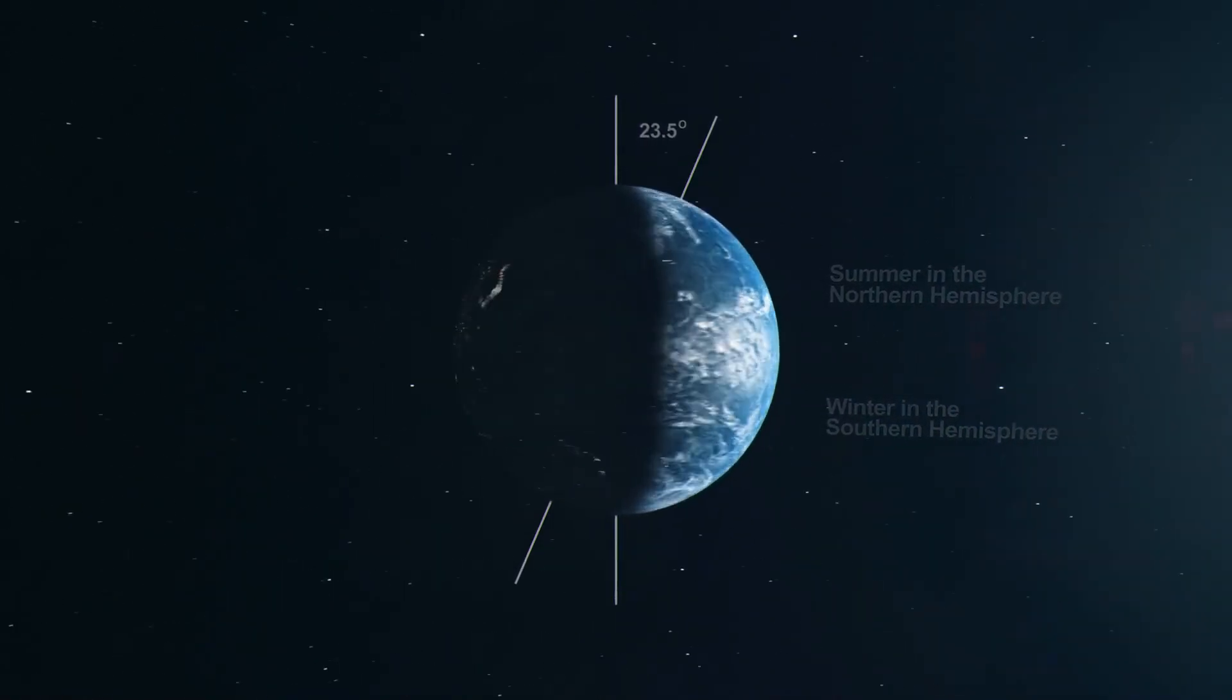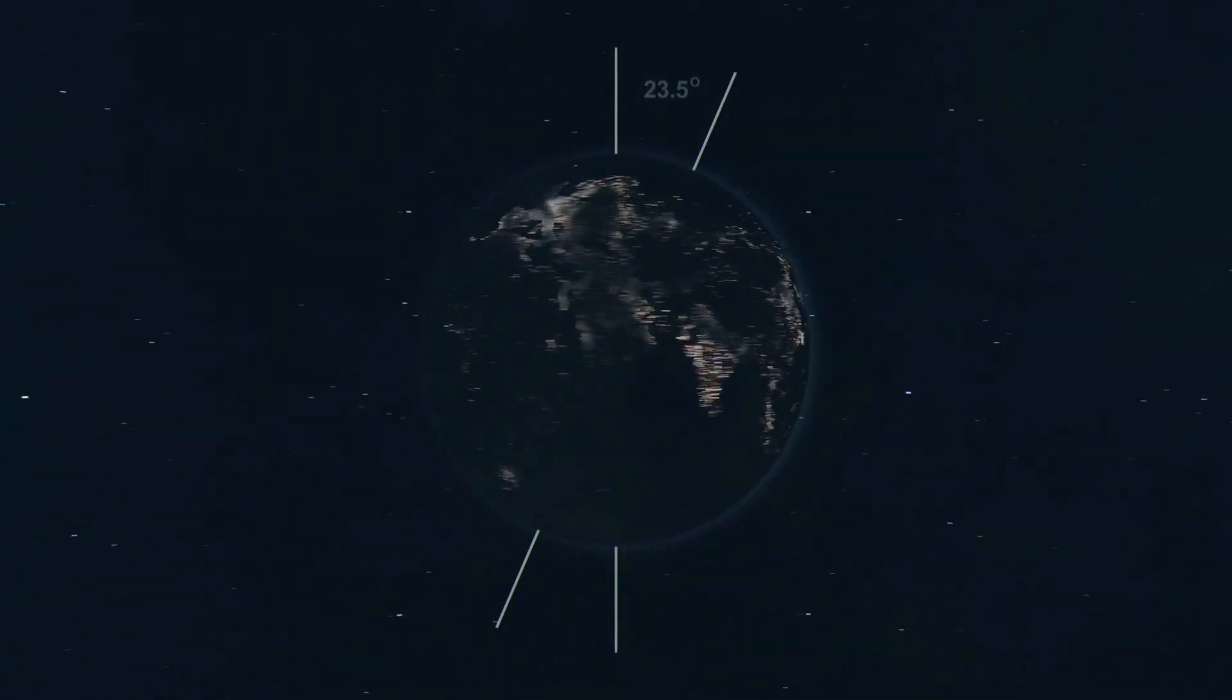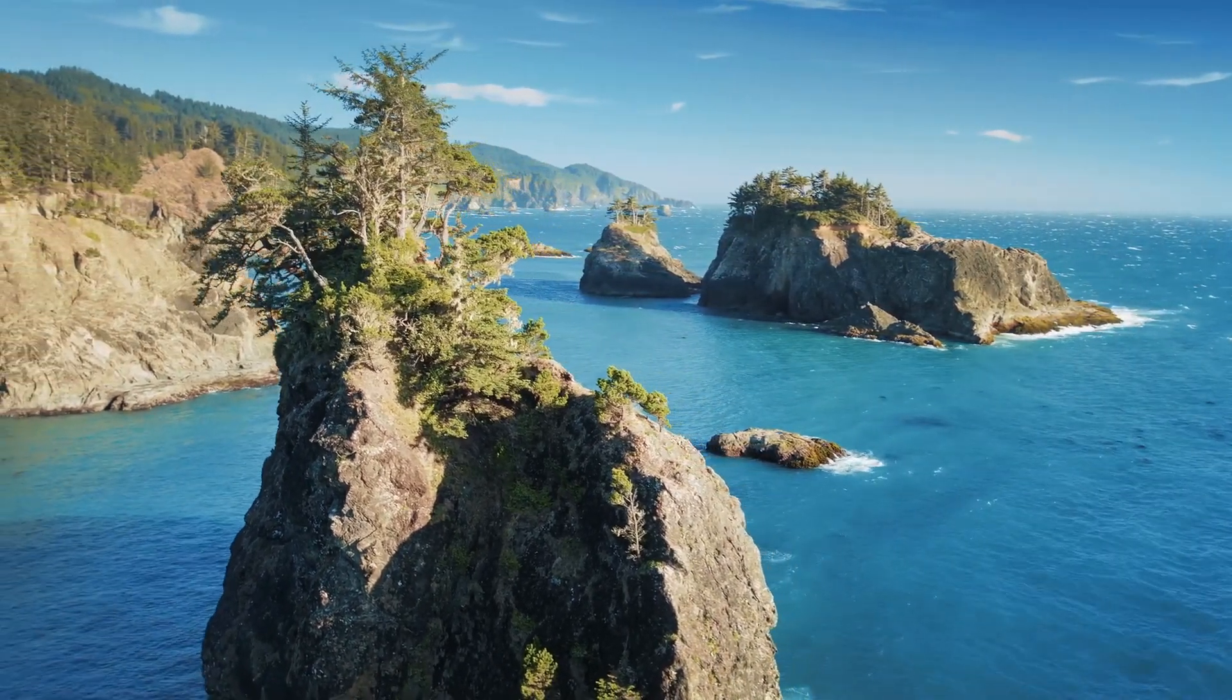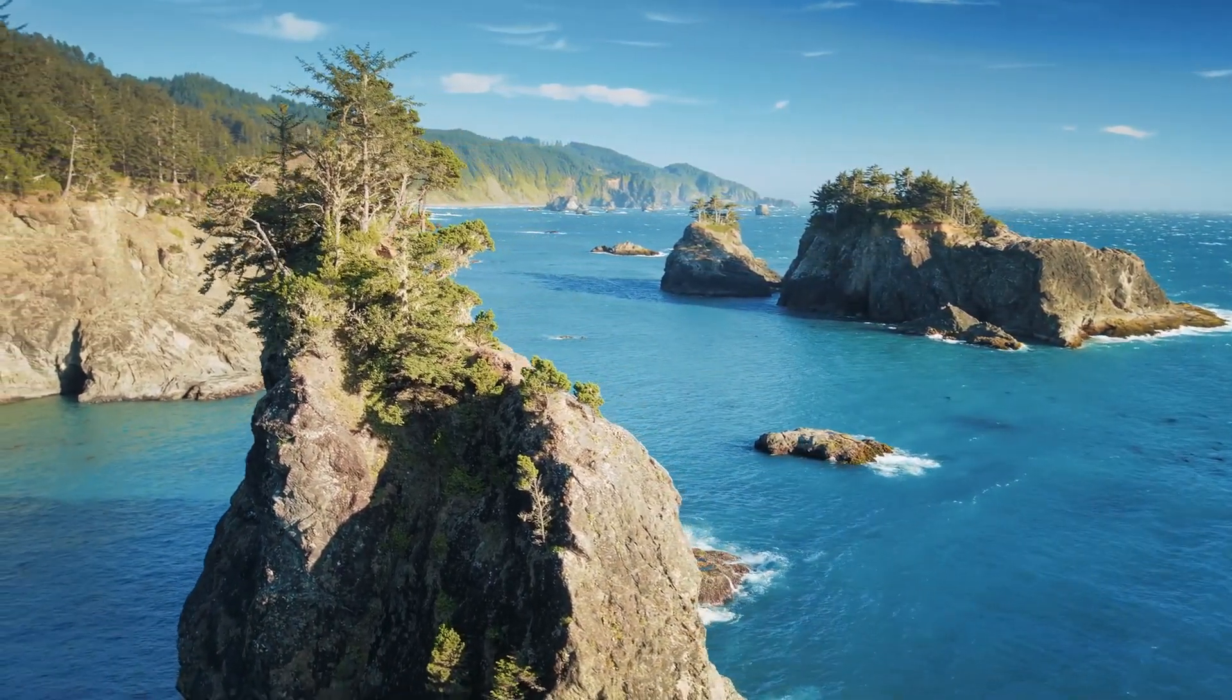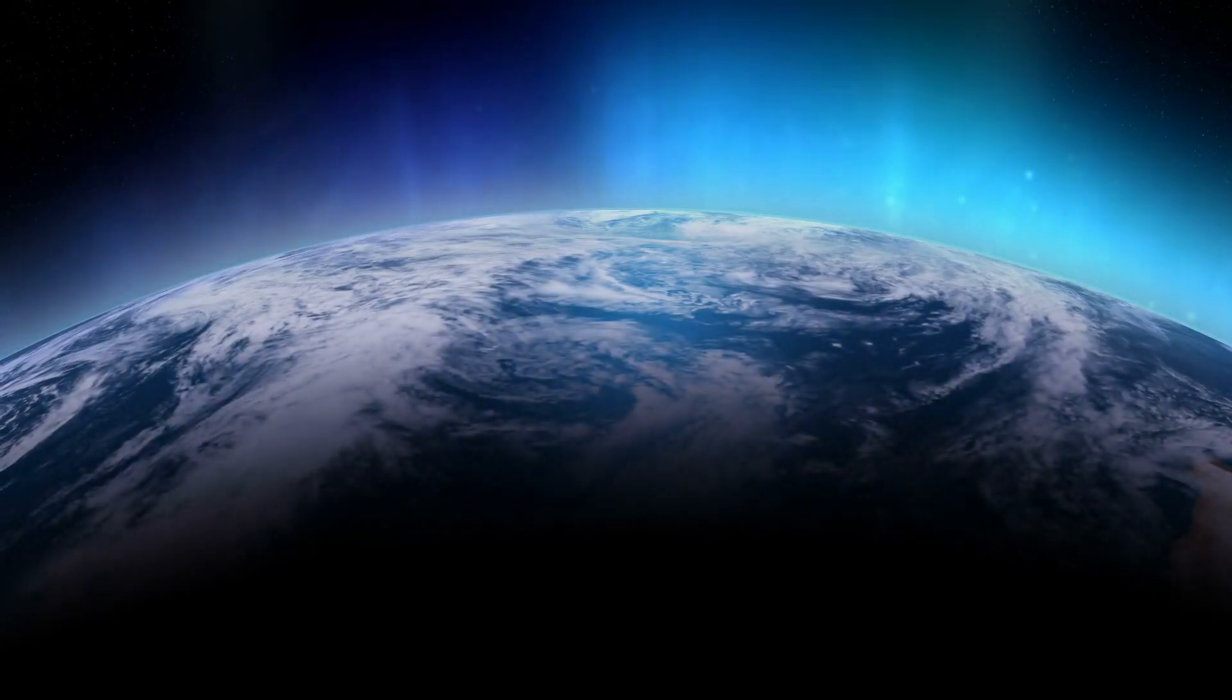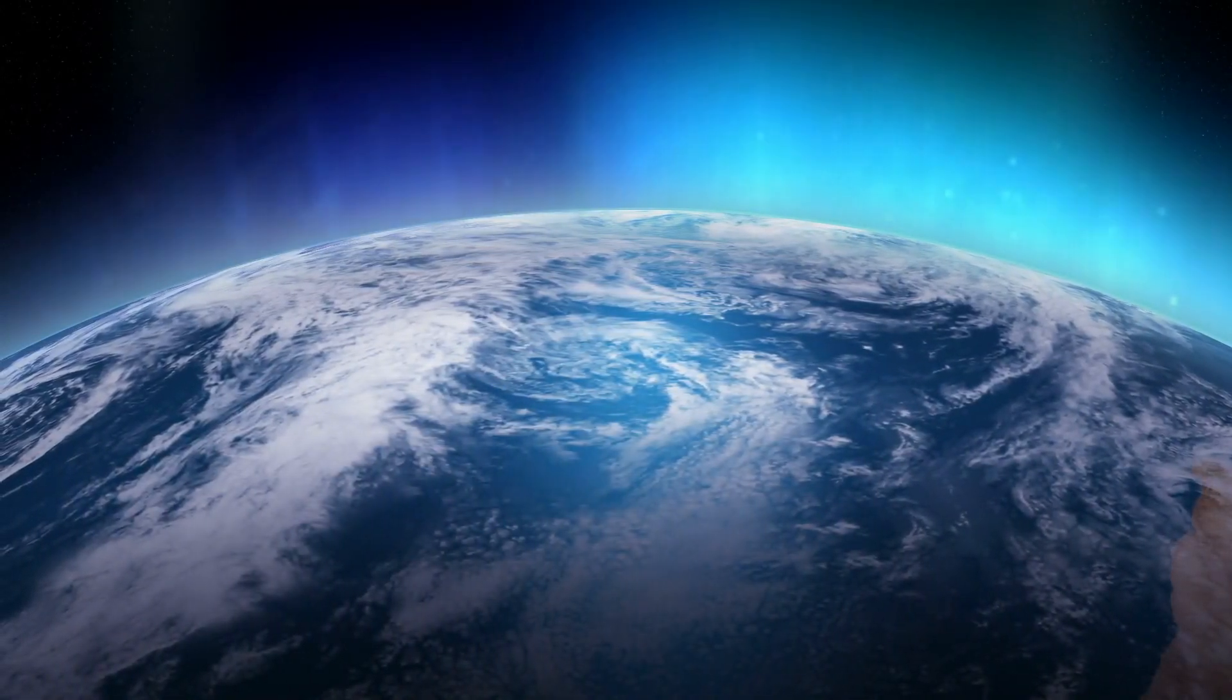The Voyager missions have drawn the edges of the solar system in a way that has never been done before. Findings like the termination shock and the heliopause, which are places where the solar wind's impact ends, have helped us understand how our solar system is put together and given us information about how the solar wind and the interstellar medium interact.